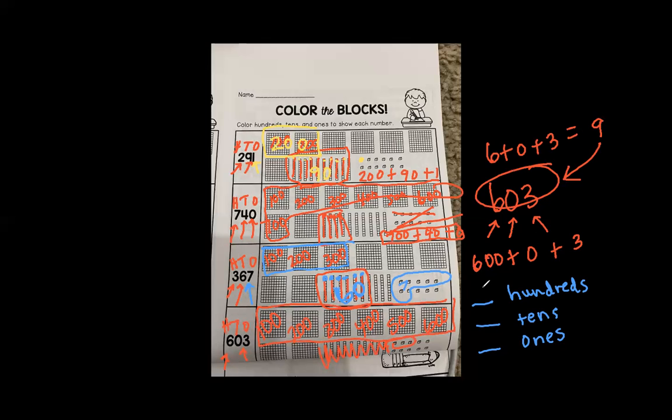There are six groups of 100, zero tens, and three ones.